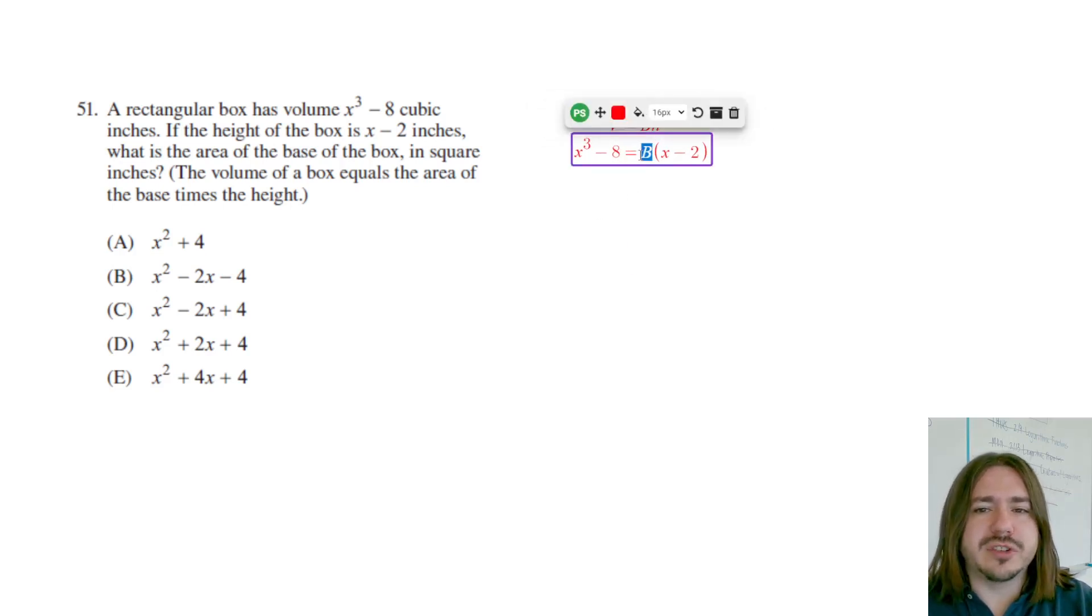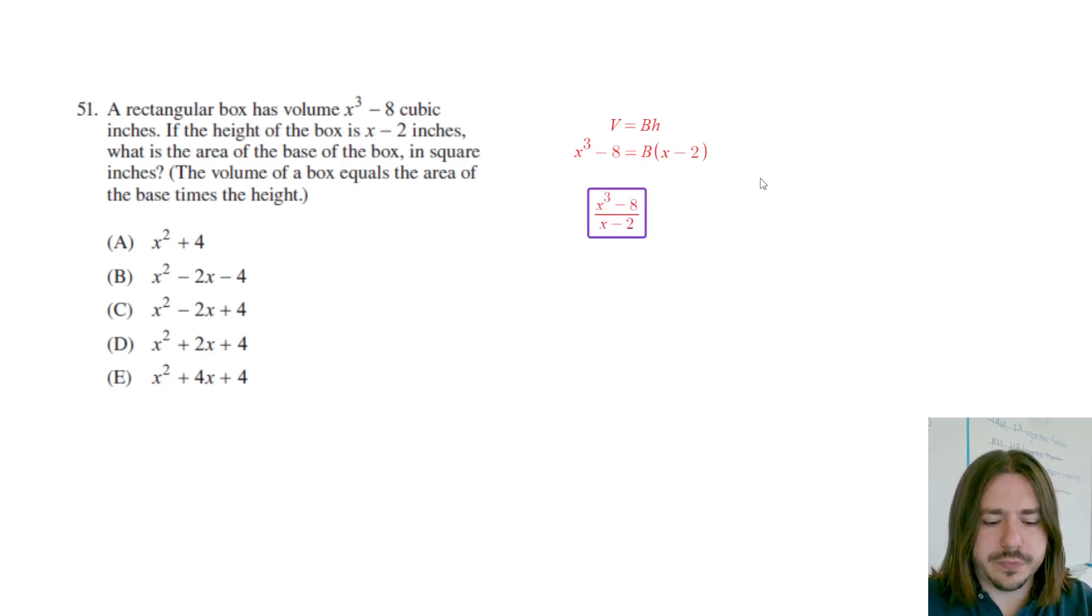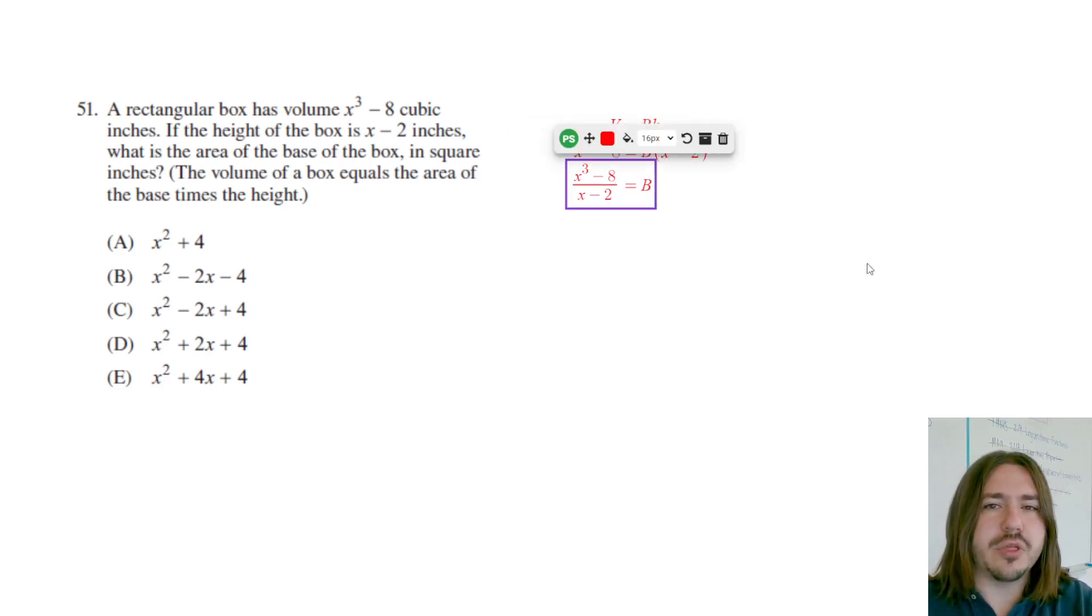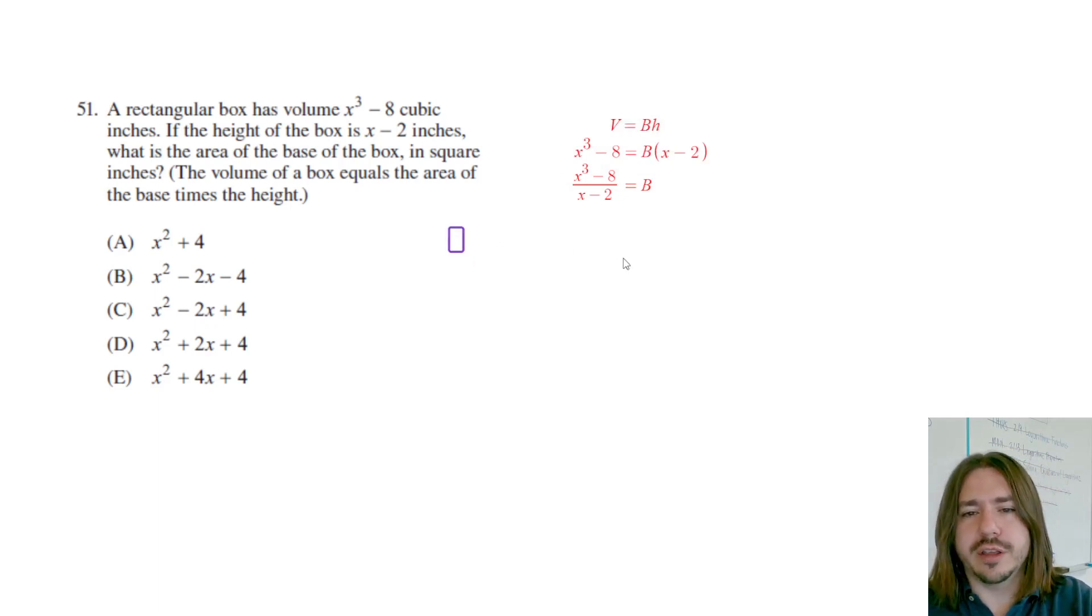If I'm thinking about this purely algebraically, the way to find the area of the base is to simply divide both sides by x minus two. So I'd have x cubed minus eight divided by x minus two equals b. To divide these polynomials we'll use either long division or synthetic division. There is another tricky way without doing the division, but let me show you how the division would work.